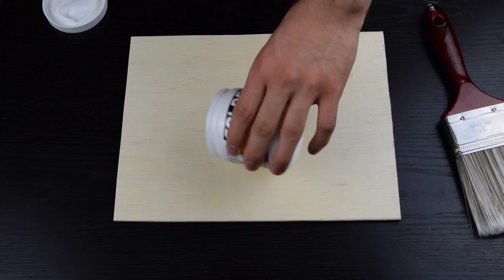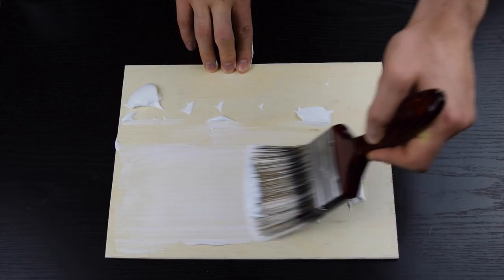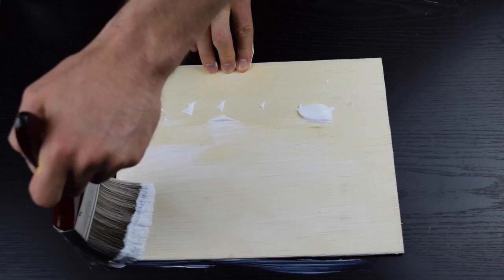Start by applying your gel medium onto the wood and you want to make sure that you apply a lot of it because the gel medium will help the picture adhere better onto the wood. So the more you have, the cleaner and sharper your picture will look. Spread that out evenly, make sure you don't have any globs because that will show on your picture.